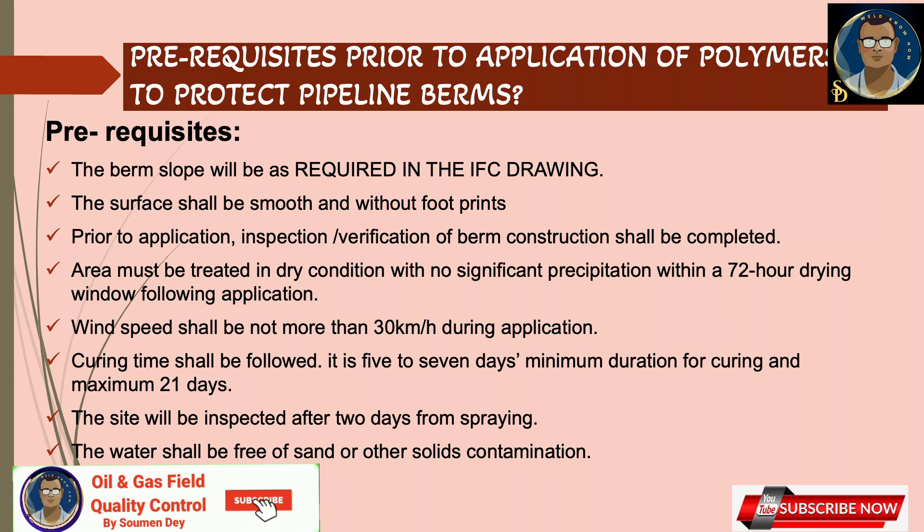Polymer spray companies have some prerequisites from the contractor which must be prepared before spraying can be done. The berm slope shall be as required in the IFC drawing. The surface shall be smooth without footprints prior to application, and inspection or verification of berm construction shall be completed. The area must be treated in dry conditions with no significant precipitation within a 72-hour drying window following application. Wind speed shall not exceed 30 km per hour during application. The water shall be free of sand and other solid contamination.